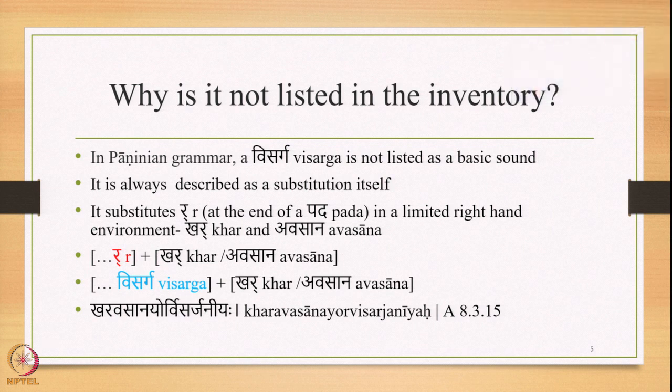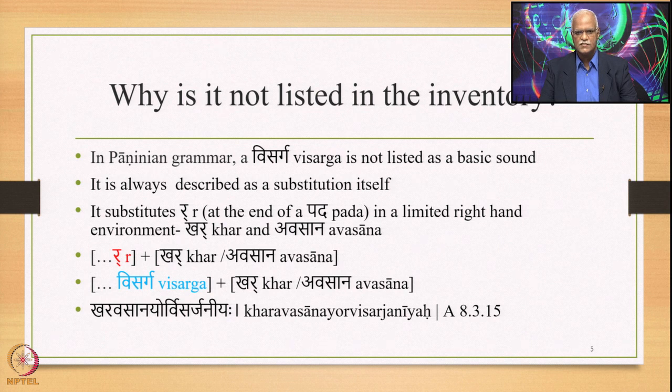Visarga is not listed in the 14 Sutras that appear at the beginning of the Ashtadhyayi, nor is it listed in the basic inventory — the traditional inventory also known as Matrika Patha. It is always described as a substitution itself. So Visarga itself is a substitution.